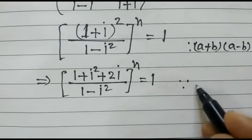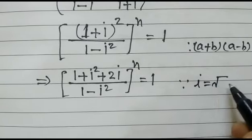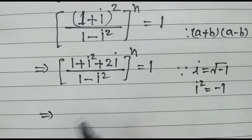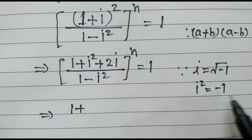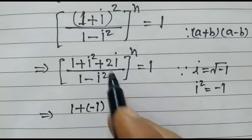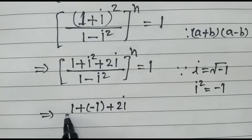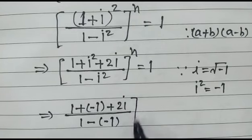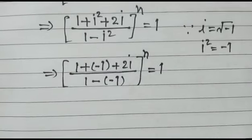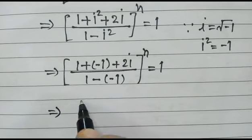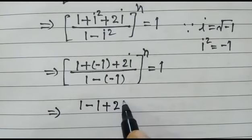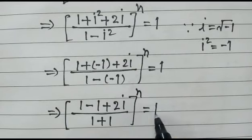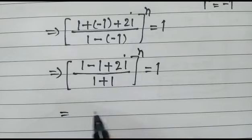As we know, iota i is equal to the square root of minus 1, so i squared is equal to minus 1. Replacing i squared with minus 1, we get: (1 minus 1 plus 2i) over (1 plus 1), whole power n equals 1. This simplifies to i to the power n equals 1.